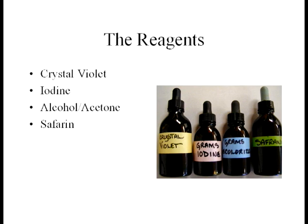There are four main reagents that are used in the gram staining technique. Crystal violet, which is a blue or purplish dye. Iodine, which is used to form a complex with crystal violet. Alcohol or acetone, or a mixture of the two, is used as a decolorizing agent. And then finally, safranin, which is a red or pinkish colored dye.